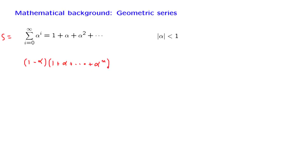We do this multiplication. We get a bunch of terms. We do the cancellations. And what is left at the end is 1 minus alpha to the power n plus 1.